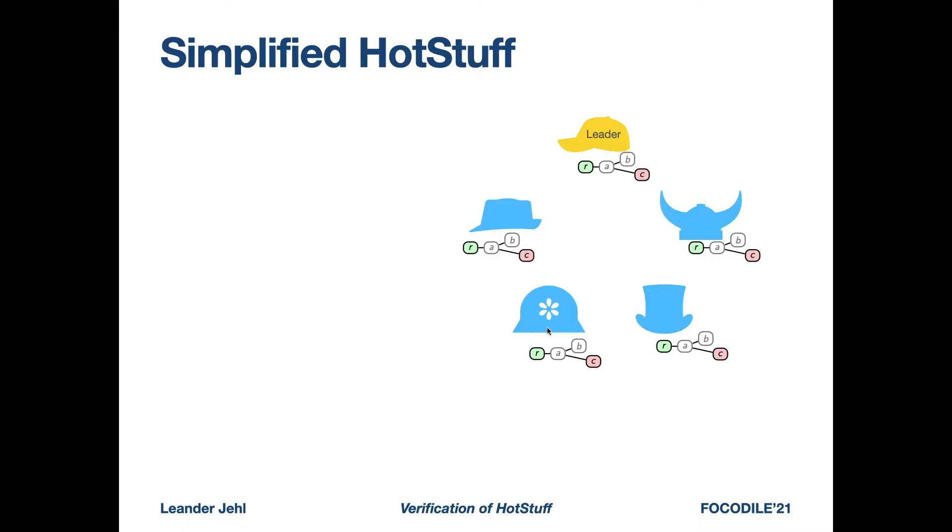So how does simplified HotStuff work? We assume a set of processes which are shown as different heads. Each process has a local copy of the tree. The algorithm proceeds in the following steps. First, the leader adds a new block and sends that to the followers. Then the followers validate the new block and add it to their tree if everything is okay.